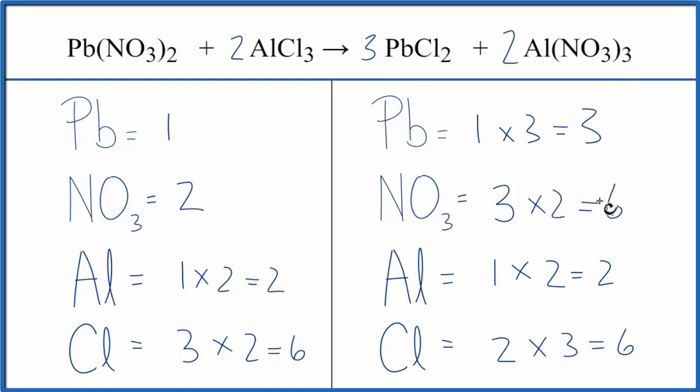Might as well just keep going up. Let's fix the nitrates. We could put a 3 in front of the lead 2 nitrate. Now we have 2 times the 1 nitrates. We have 2 nitrates times 3. That will give us 6. Those are balanced. And then the 1 times the 3. And the leads are balanced. And we're done. This equation is balanced.